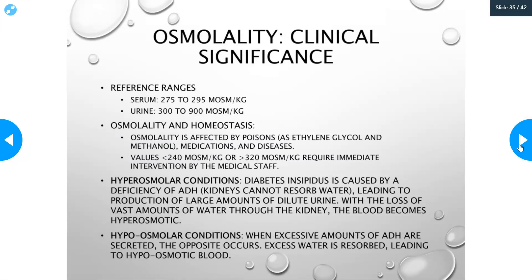The reference ranges for serum osmolality are 275 to 295 milliosmoles per kilogram — a fairly narrow range. For urine, anywhere from 300 to 900 milliosmoles per kilogram is considered normal. Osmolality is affected by poisons such as ethylene glycol, which is antifreeze, and methanol. Methanol is a type of alcohol sometimes found in moonshine, and it can be lethal — just four milliliters of methanol can be lethal.